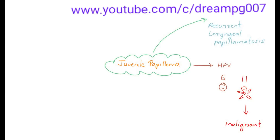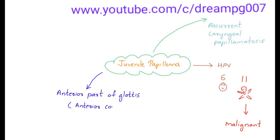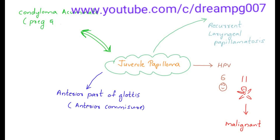The most common location for juvenile papilloma is on the anterior part of the glottis. This condition usually has an association with condyloma acuminata present during the pregnancy and parturition period of women.